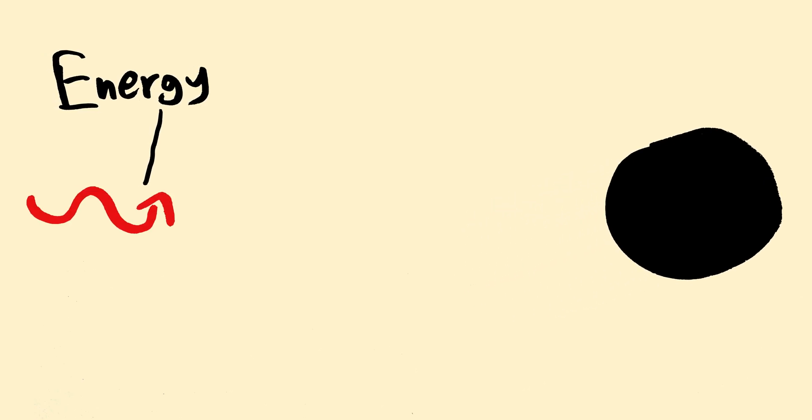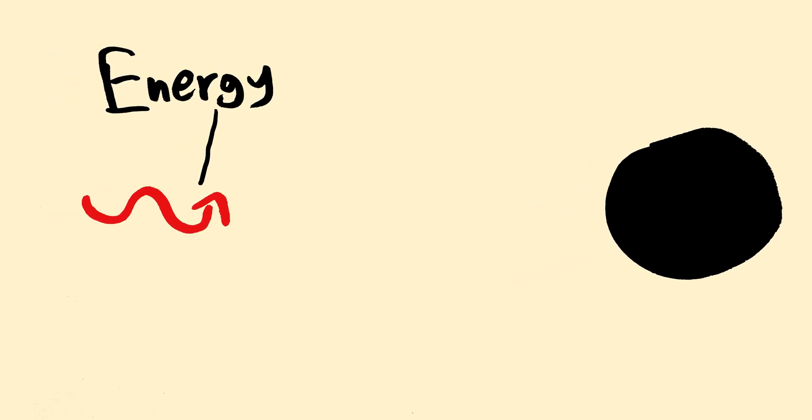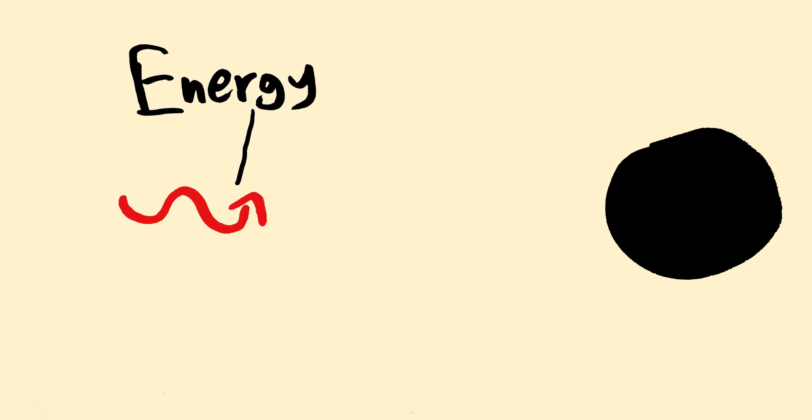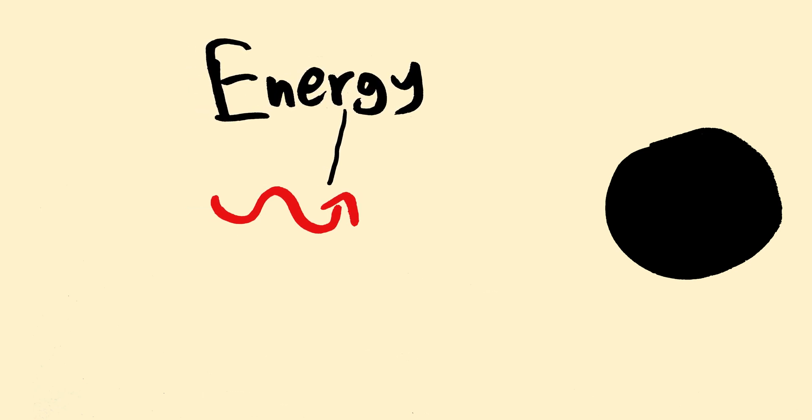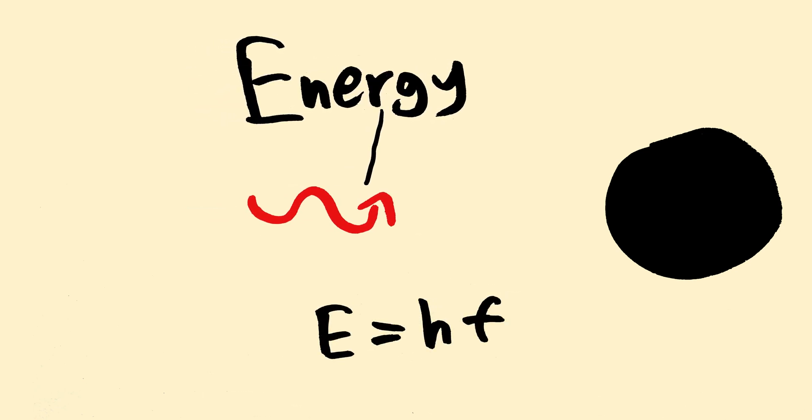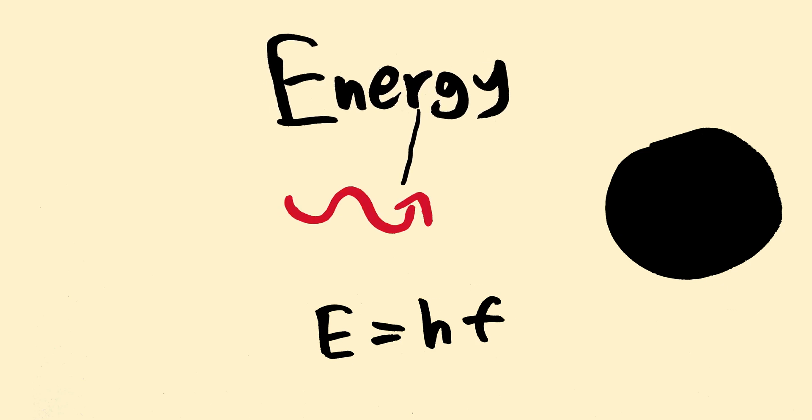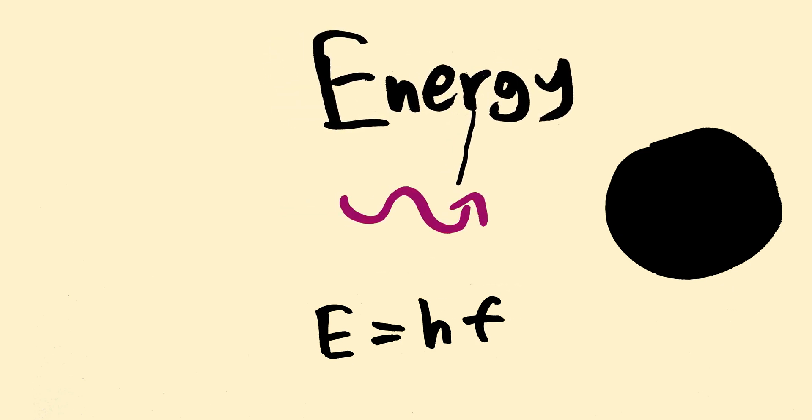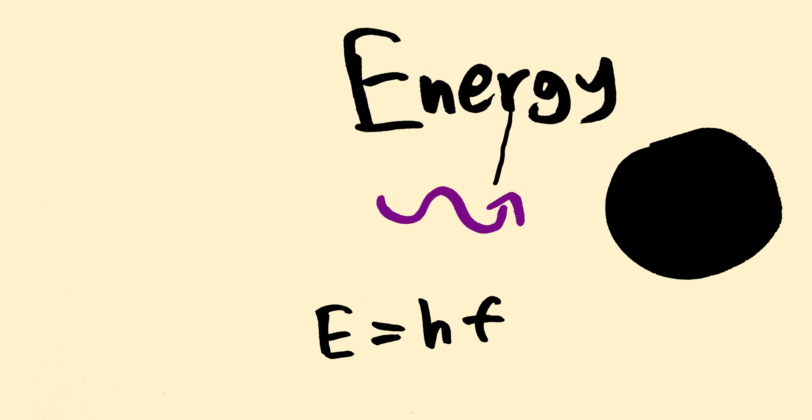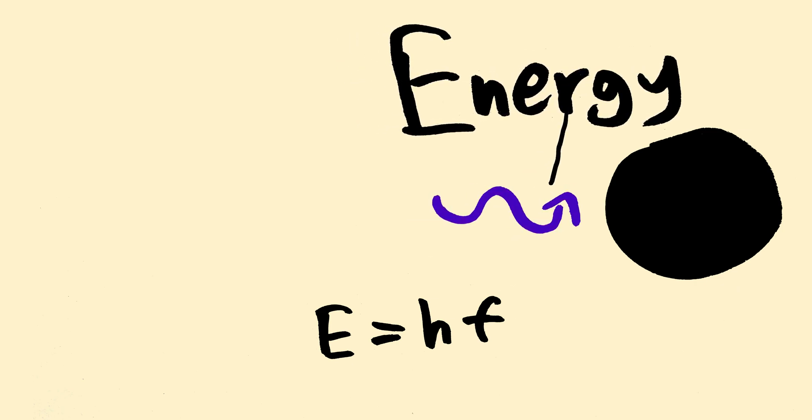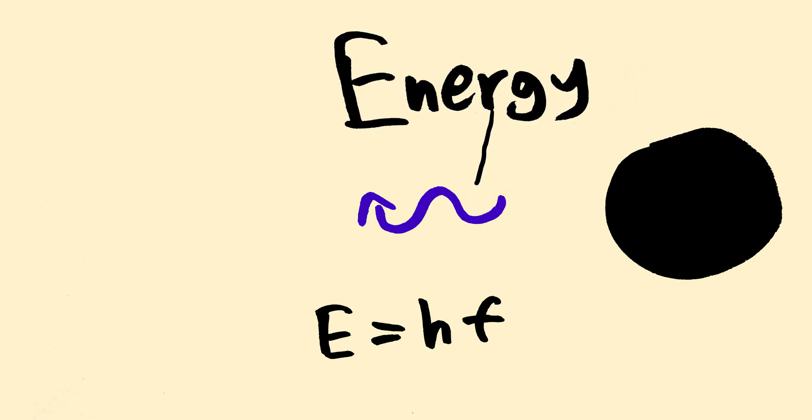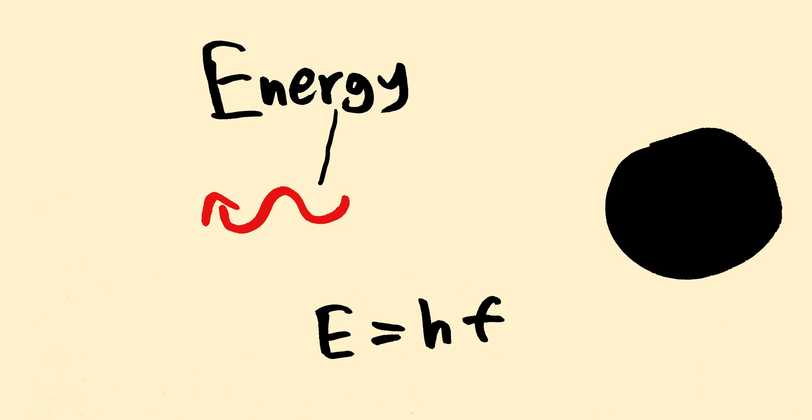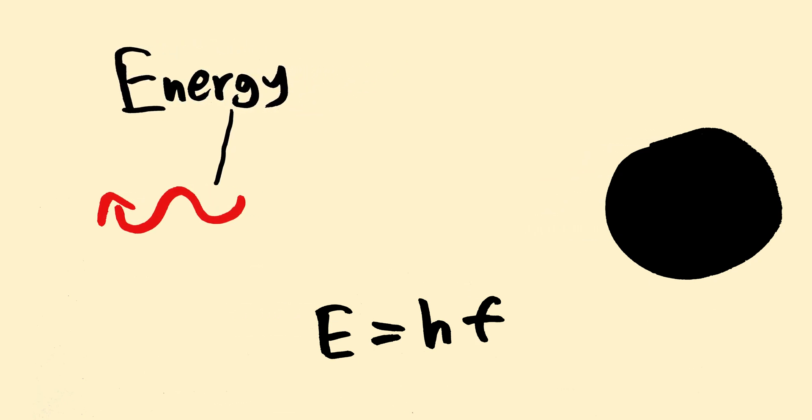Another effect gravity has on light is that it changes its color. Why? Because during its descent, the photon gains energy, and since the energy of the photon is proportional to its frequency, it will change color. If it's red, its color will be shifted towards the blue side. And in the case when the photon moves radially away from the black hole, it will lose energy, and its color will be shifted from blue to red.